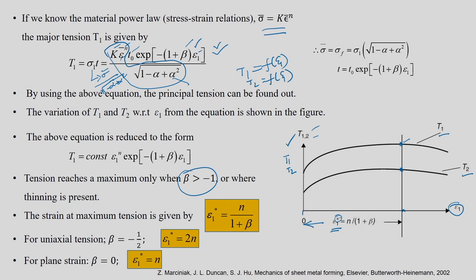If you know epsilon_1*, you can get epsilon_2* equals beta times epsilon_1*, considering a proportional process where beta does not change. For uniaxial tension where beta equals minus half, epsilon_1* equals 2n. For plane strain where beta equals 0, epsilon_1* equals n.